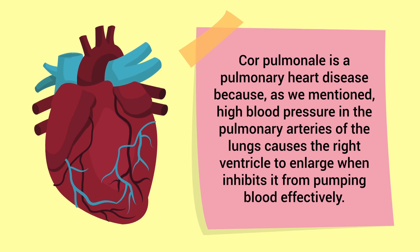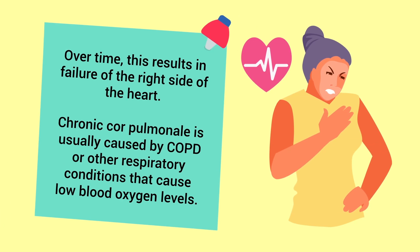Cor pulmonale is a pulmonary heart disease because high blood pressure in the pulmonary arteries of the lungs causes the right ventricle to enlarge, which inhibits it from pumping blood effectively. Over time, this results in failure of the right side of the heart. Chronic cor pulmonale is usually caused by COPD or other respiratory conditions that cause low blood oxygen levels.